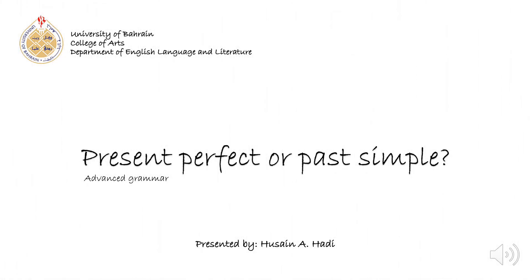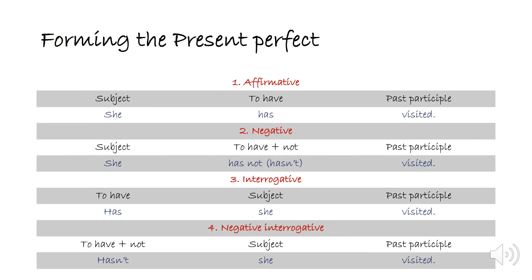Hello everyone, today we're going to talk about present perfect or past simple. First of all, let's have a look at how to form the present perfect. In the affirmative, we use the subject followed by 'to have' followed by the past participle.